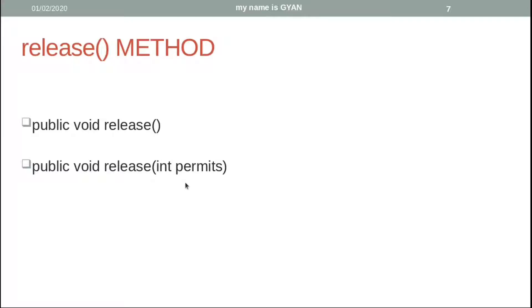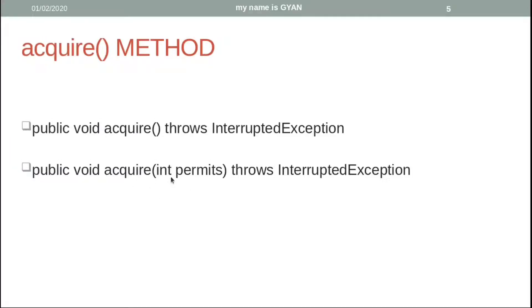What is the meaning of the integer in the acquire and release methods? When you pass an integer — which we call permits — as a parameter to the acquire method, that thread consumes that many values of the initial counter. For example, if the initial counter was three and you call acquire with two as its argument, then the thread executing this method will consume two counter values. If the initial counter is only one, then the thread calling acquire with two as its argument will not be able to execute the critical section, because it requires at least two counter values.